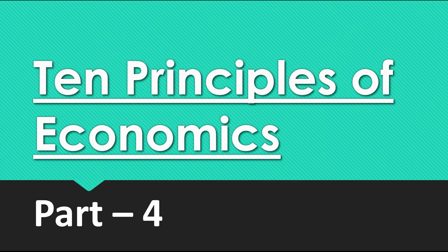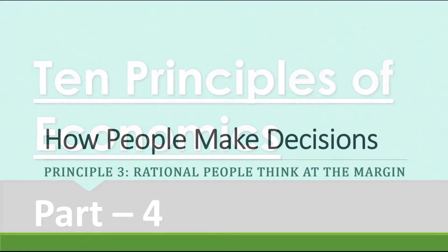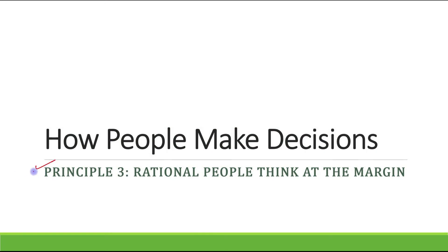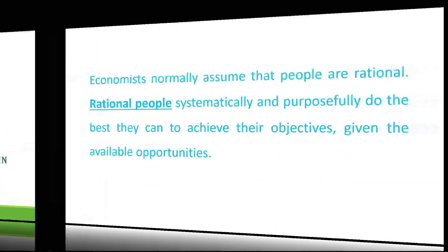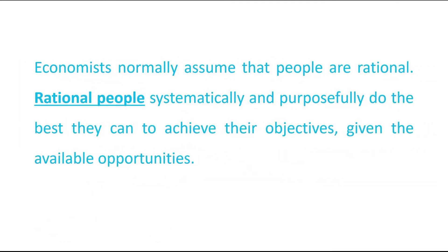Hello students. Next we are going to start with part 4 of 10 Principles of Economics, in which we will talk about Principle Number 3, which is: rational people think at the margin. Economists normally assume that people are rational. Rational people systematically and purposefully do the best they can to achieve their objectives, given the available opportunities.